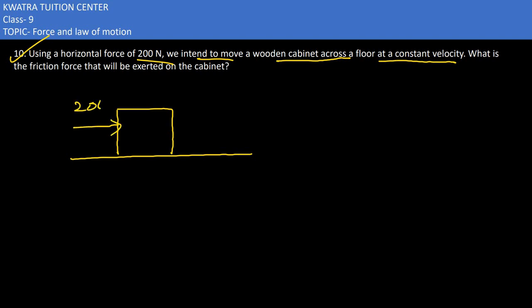Let's say in the forward direction they are moving. So according to the third law of motion, we know an equal amount of force will act in the opposite direction. So how will the frictional force be? Minus 200 N.